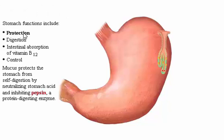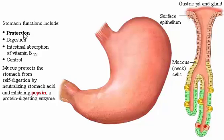Surface epithelial cells and mucus cells secrete a thick mucus layer that covers the gastric mucosa. Mucus protects the stomach from self-digestion by neutralizing stomach acid and inhibiting pepsin, a protein-digesting enzyme. The mucus, along with tight junctions between epithelial cells, constitutes the gastric mucosal barrier.